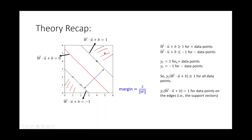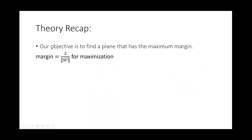We use yi equals one for the positive data points and yi equals minus one for the negative data points. With this, we find the expression: yi times (w dot u plus b) is always greater than or equal to one for all data points regardless of class. For those data points on the edge — the two black lines shown here — yi times (w dot u plus b) equals one. These points are our support vectors.